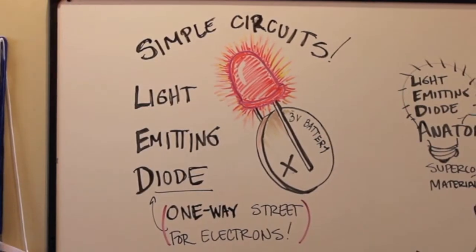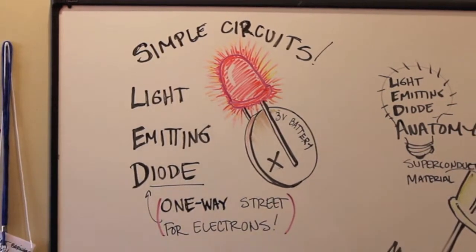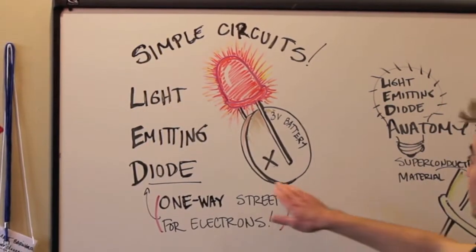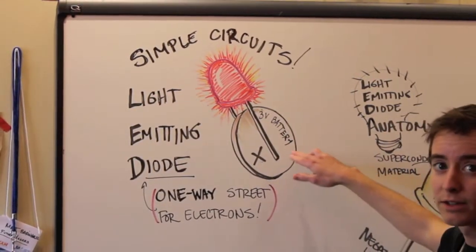An LED is a light-emitting diode. A light-emitting diode is a one-way street for electrons, so they need to enter through the negative leg and exit through the positive leg.